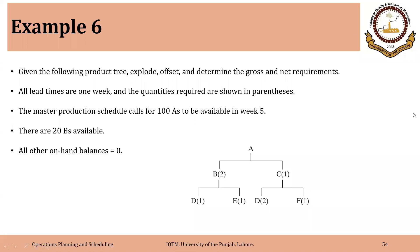Here in example 6, we are having a product tree. In previous examples, we focused on one product or one component and didn't actually complete a product tree. But here we will see that. Given the following product tree, we need to explode, offset, and determine the gross and net requirements. All lead times are one week, and the quantities required are shown in parentheses.